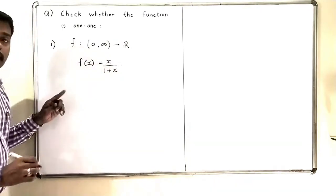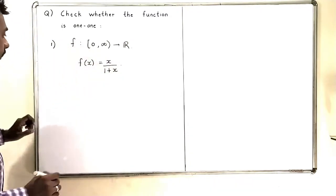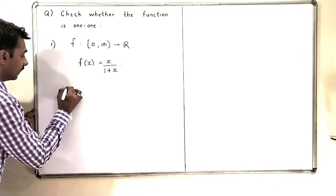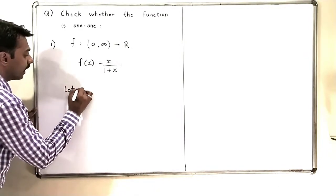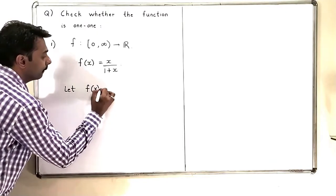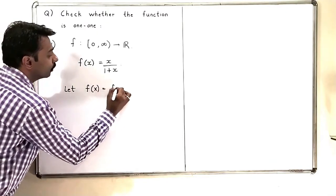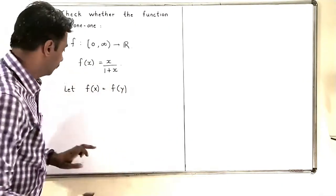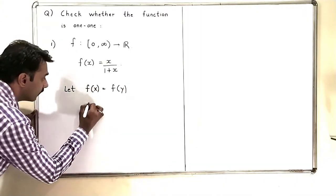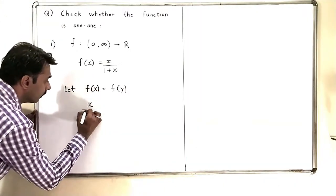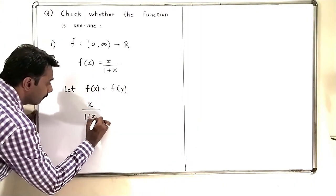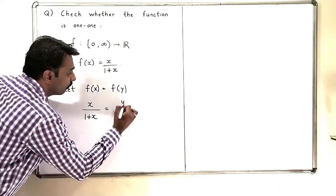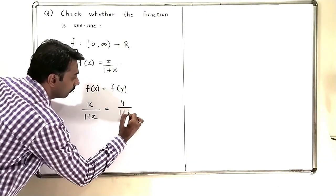Now, I am going to check whether this function is one-to-one or not. The definition of one-to-one: we will say that let f(x) = f(y), and we check whether this simplifies to x = y. So f(x) is x/(1+x) = f(y) = y/(1+y).